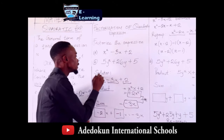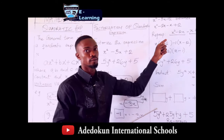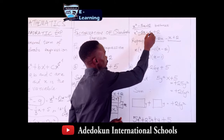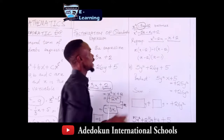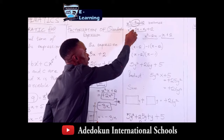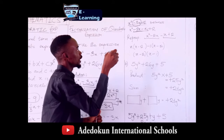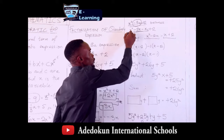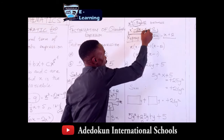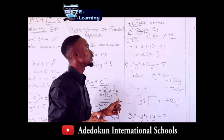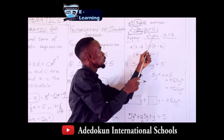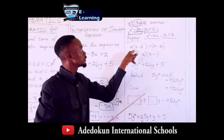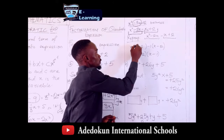These two numbers — minus 2 and minus 1 — are what you use to reframe the expression. You split the middle term, minus 3x, into minus 2x and minus x. Then you regroup the first two terms and the last two terms. From the first two terms, x is common; factorizing x out of x² minus 2x, you are left with x minus 2.